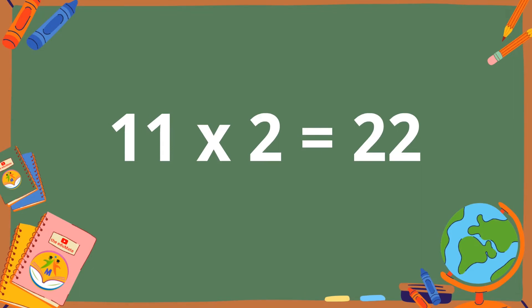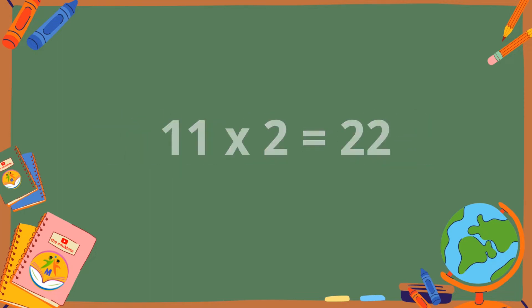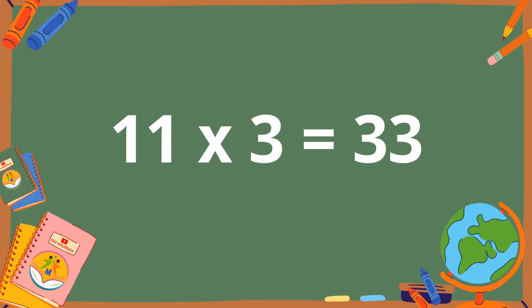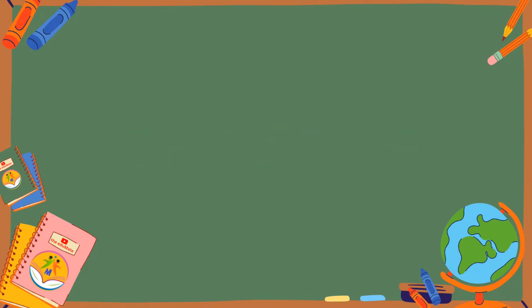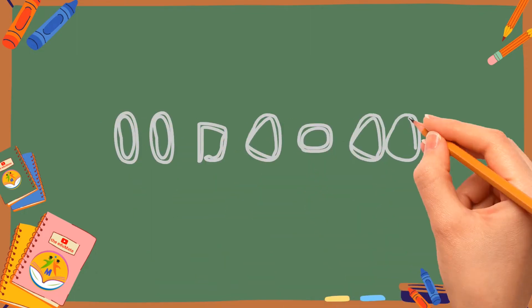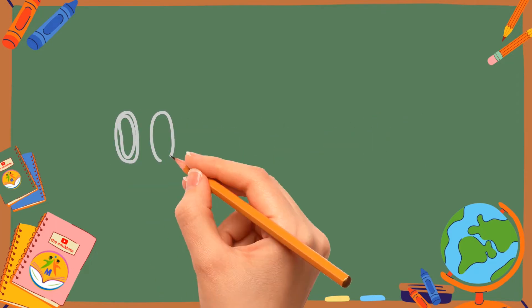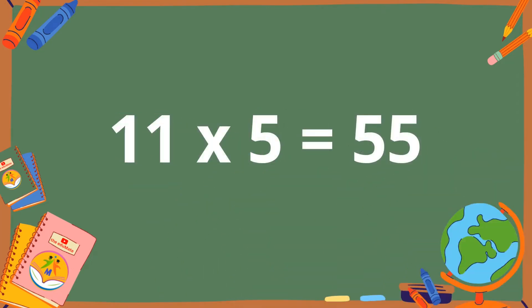11 twos are 22. 11 threes are 33. 11 fours are 44. 11 fives are 55.